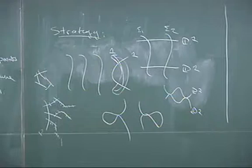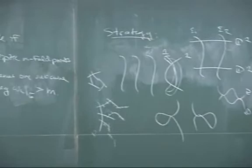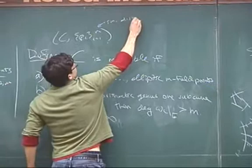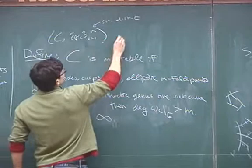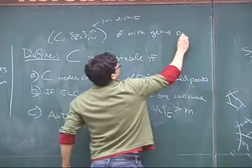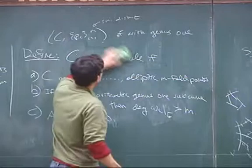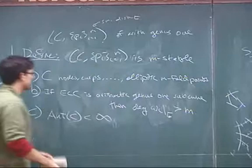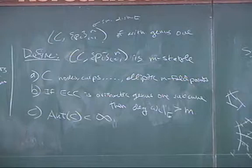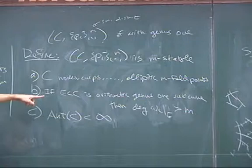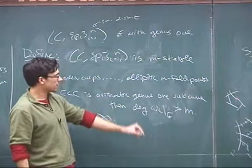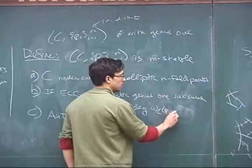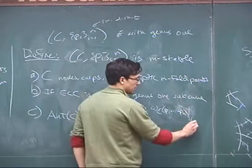For an n-pointed curve — a curve with n smooth, distinct marked points — from now on I'm only considering curves of arithmetic genus 1. I say a pointed curve is M-stable if: C has nodes up through elliptic M-fold points with the same automorphism condition, but on arithmetic genus 1 subcurves, instead of requiring the dualizing sheaf to have degree greater than M, I ask that the dualizing sheaf twisted by the marked points, restricted to any arithmetic genus 1 subcurve, has degree greater than M.